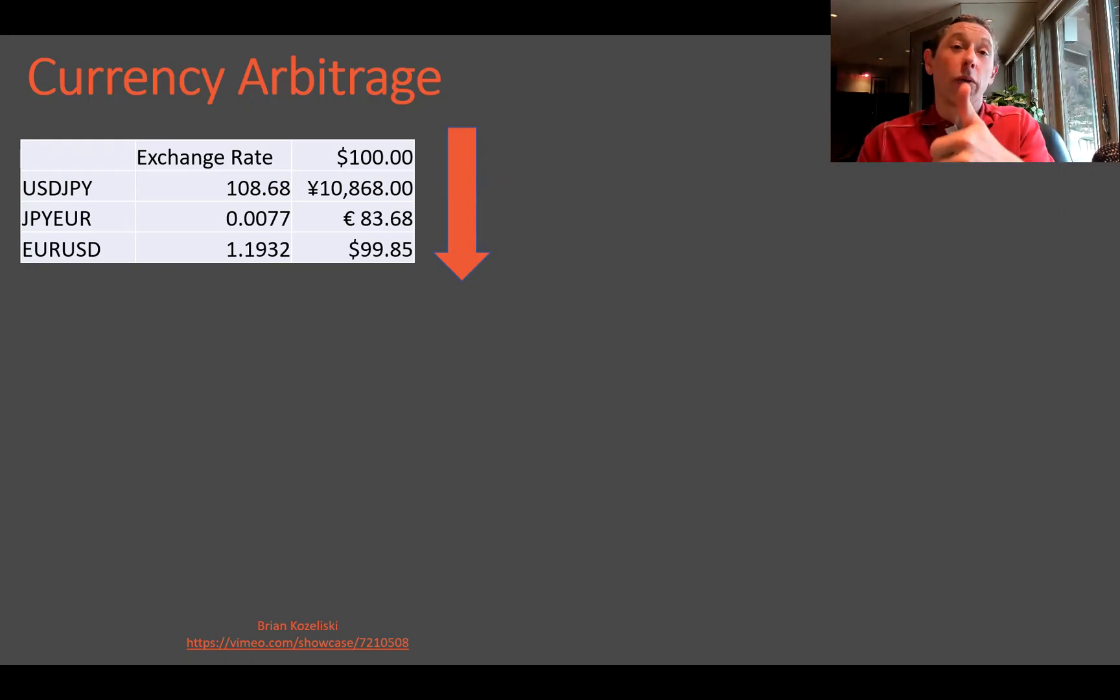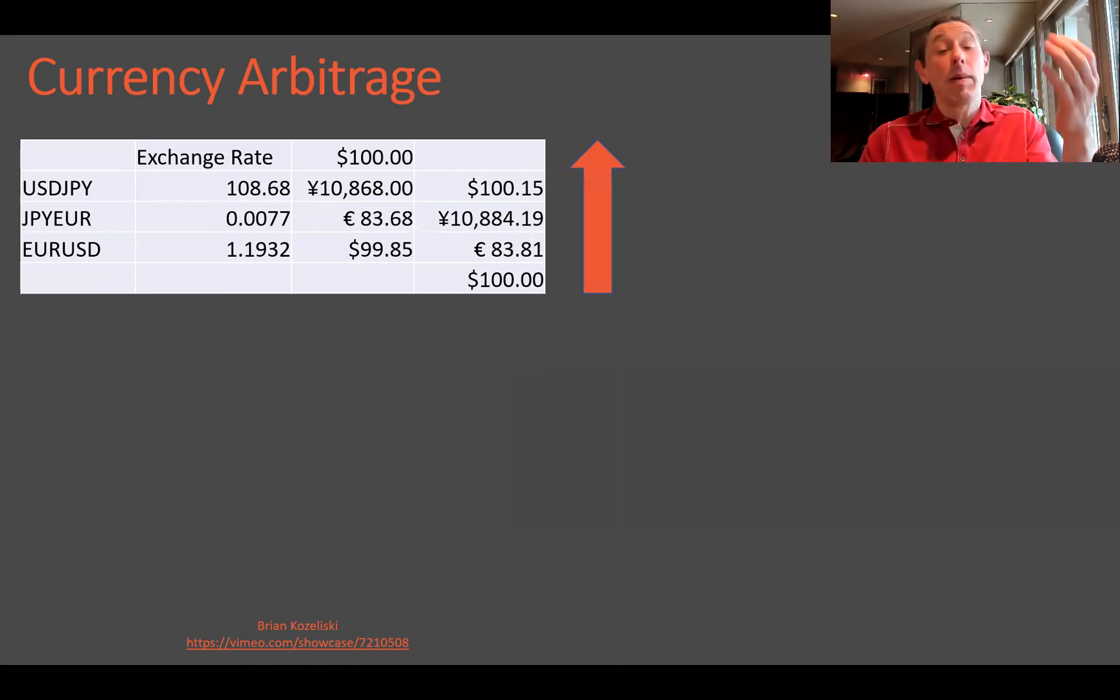Now, what if we kind of flip this and go the other way? And if we do that, it looks like, hey, maybe there is an arbitrage here because we're able to get, you know, $0.15 on this trade going from dollars to euro to yen and back to dollars. So we could do that.